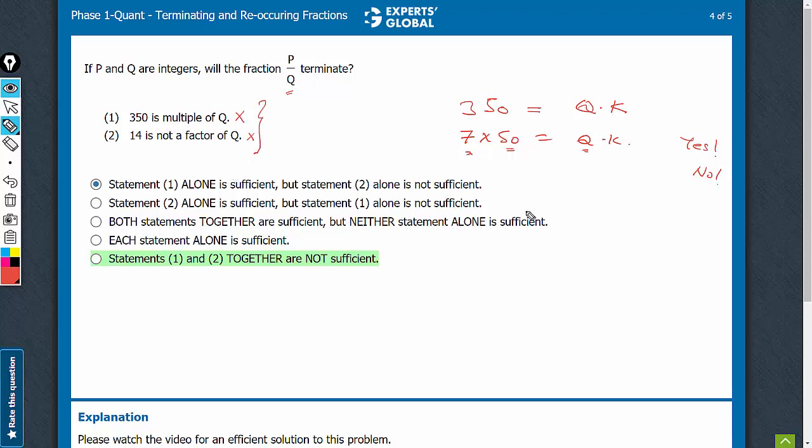On combining, what do we get? On combining, many students will get this question wrong, thinking that 14 is not a factor of Q would mean that Q does not have a 7 in it, which is not the case.